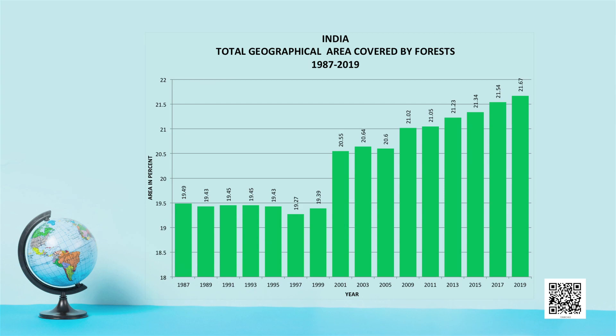Forest cover reduced from 1987 to 1999, and then there is a slight increase thereafter. We conclude that India's forest cover had a roller coaster journey. You may note down your arguments in this regard.